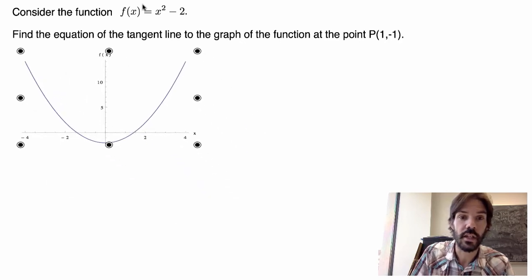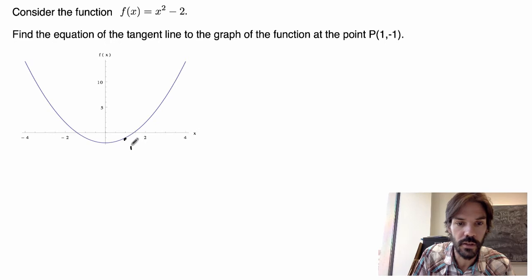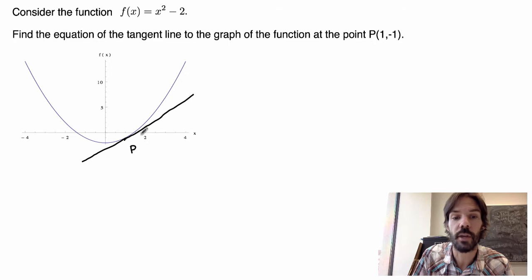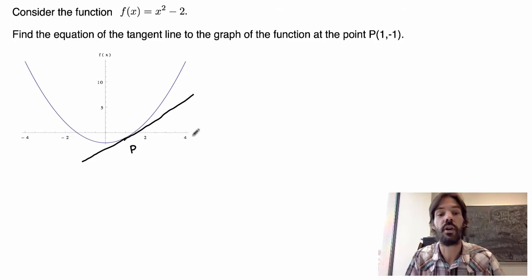And the point we're interested in is the point (1, -1), so where is this? Well, 1 is here, so (1, -1) will be the point here. So this is my point P, and I'm asking you to find the equation of the tangent line. Remember, tangent line is the line that barely touches the graph at this point, and I'm asking you to find this equation.